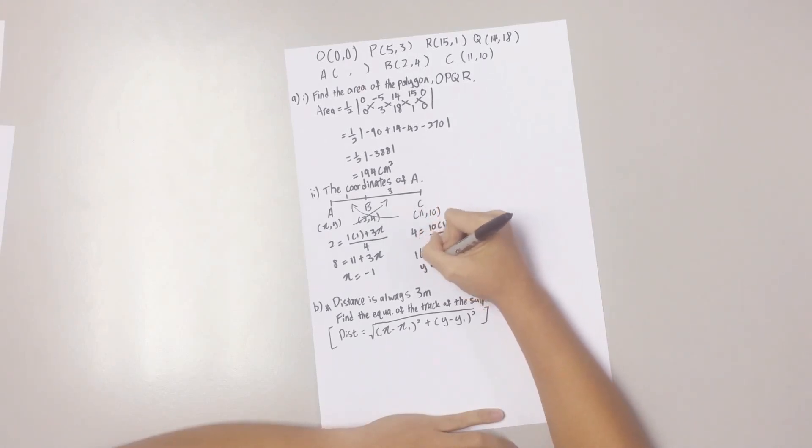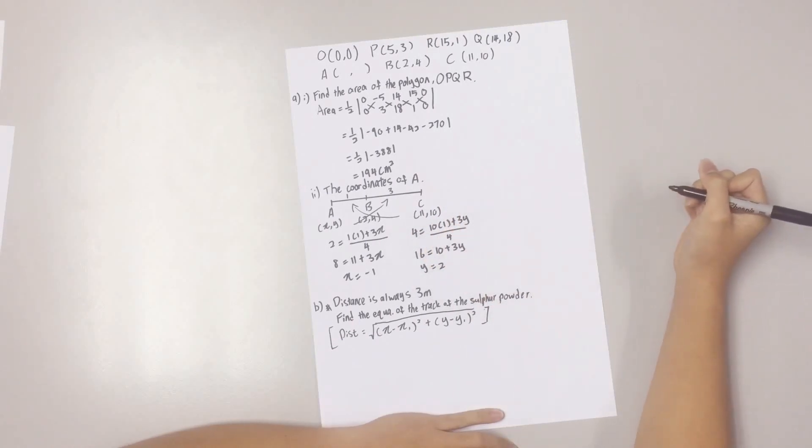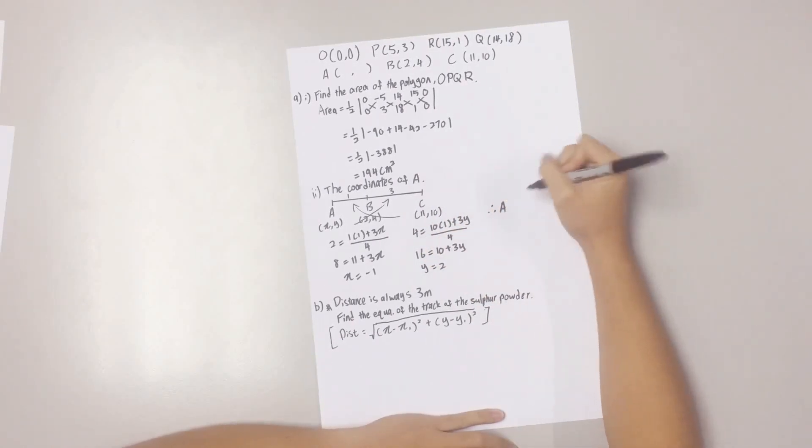Your Y is equal to 2. Therefore, your coordinates of point A is negative 1, 2.